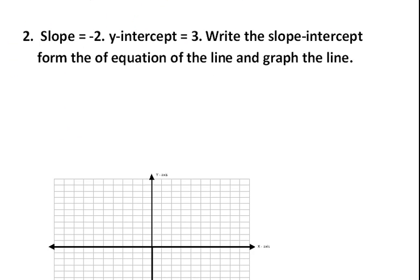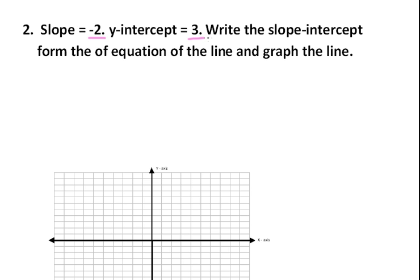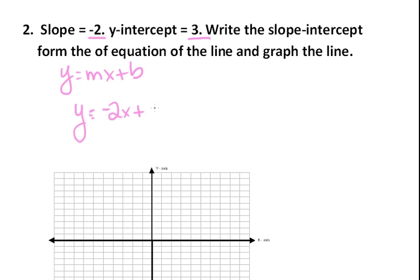Here we're given the slope and a y-intercept, and we need to write the slope-intercept form of the equation of the line and also graph the line. Remember that slope-intercept form is y equals mx plus b. We just plug these values in: y equals negative two x plus three. So this is the equation of our line.